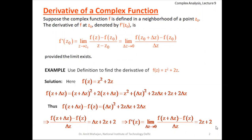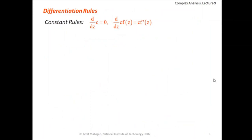So the derivative of z² + 2z is 2z + 2, confirmed by definition. We could have also calculated this using the usual formulas: the derivative of z² is 2z, the derivative of 2z is 2. So the polynomial differentiation rules are applicable for complex functions and are similar to what we have studied for real variables.